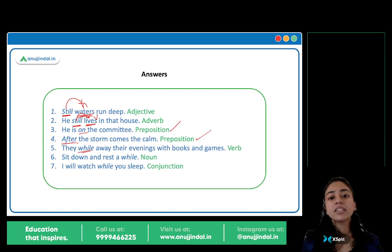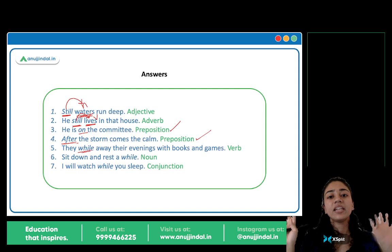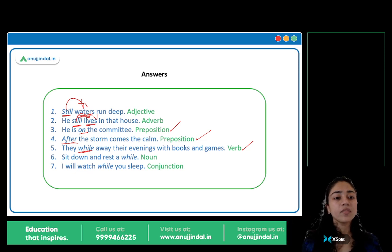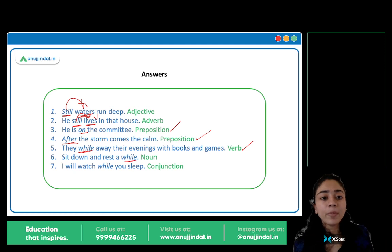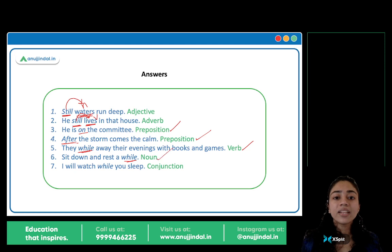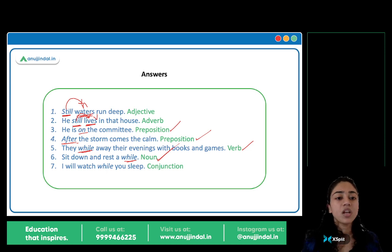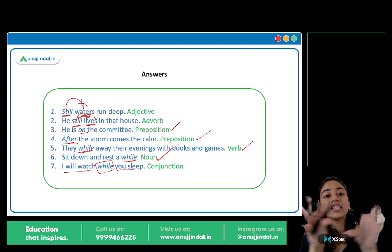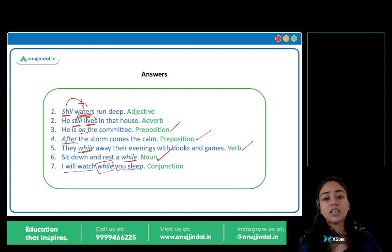'They while away their evenings with books and games.' While away matlab to spend their time in a relaxed manner — toh while yahaan pe verb hai, action hai. 'Sit down and rest a while.' Yahaan pe while ka matlab hai rest a while — rest a moment, rest for some time. That is a noun here — a while, a moment. 'I will watch while you sleep.' Donon ko join kar raha hai while — toh yahaan pe conjunction hai.